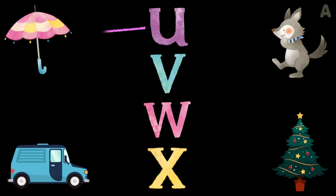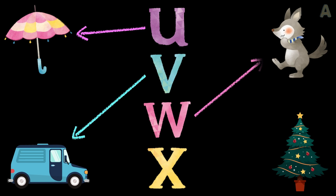U for umbrella. V for van. W for wolf. X for xmas tree.